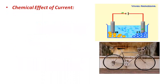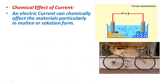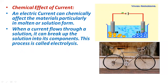The second effect is the chemical effect of current. An electric current can chemically affect materials, particularly in molten or solution form. Molten means when you heat some compound and it melts — that melted form is called molten state. When a current flows through a solution, it can break up the solution into its components, and this process is called electrolysis. Electro means due to passing electric current, and lysis means breakdown.